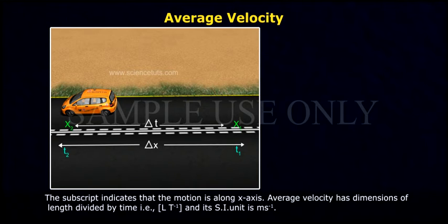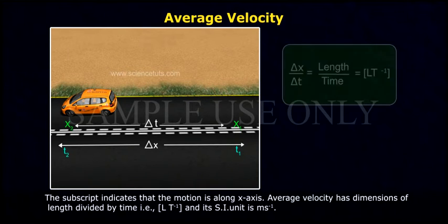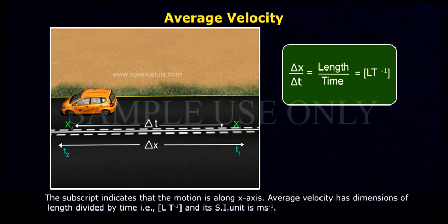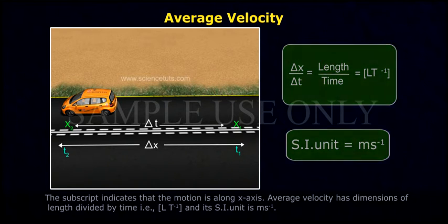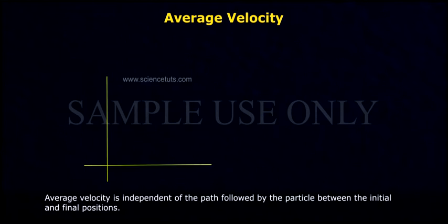Average velocity has dimensions of length divided by time, that is LT to the power minus 1, and its SI unit is meters per second. Average velocity is independent of the path followed by the particle